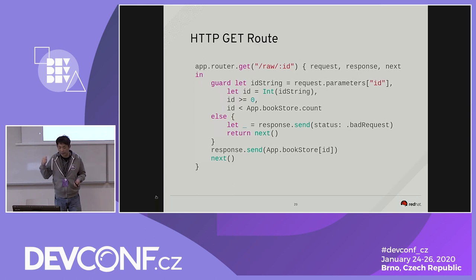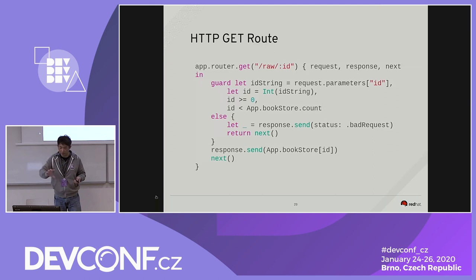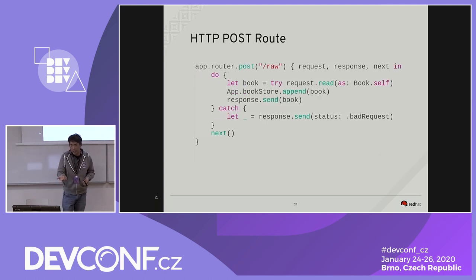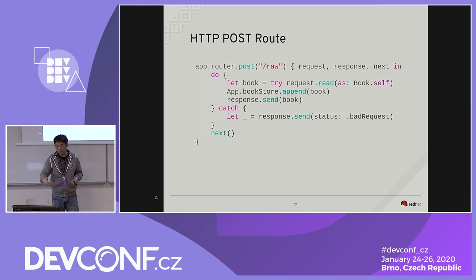This is another example of a GET endpoint. The whole coding structure is functional programming syntax: you pass in request and response, the next is the closure, and inside the closure you do some business logic and return the response. The POST API is also set up in a similar way — you pass in request and response, do some business logic, then call response.send to send back the payload for the POST response.